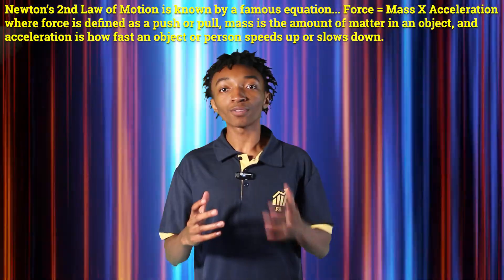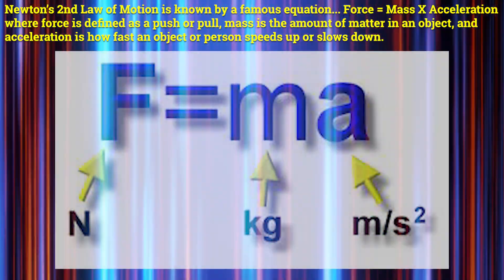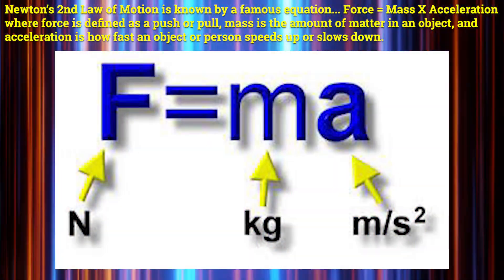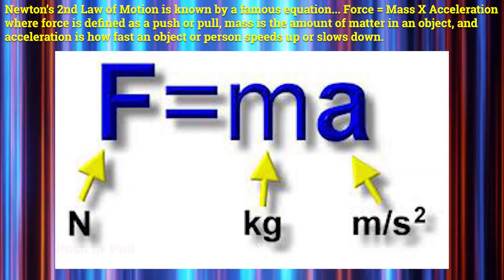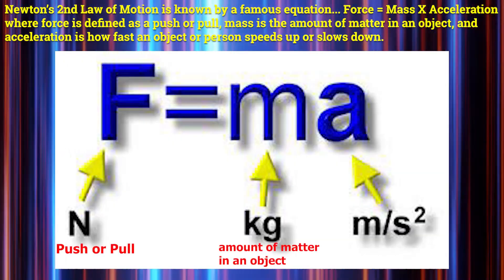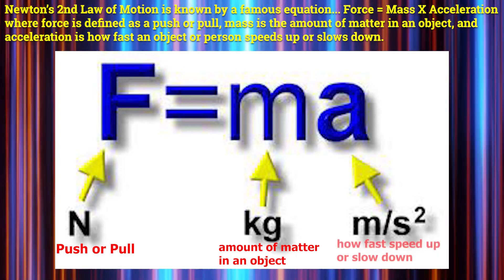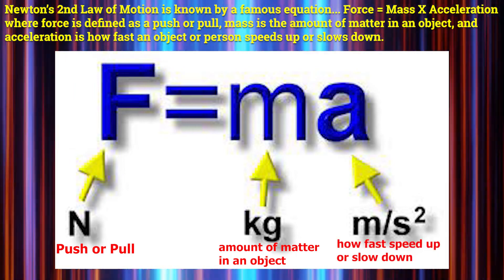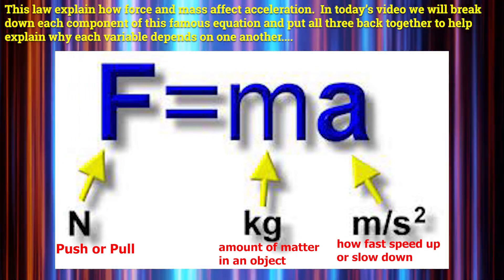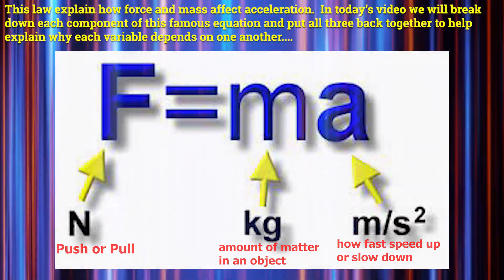Newton's second law of motion is known by a famous equation: force equals mass times acceleration. Force is defined as a push or pull, mass is the amount of matter in an object, and acceleration is how fast an object or person speeds up or slows down. This law explains how force and mass affect acceleration.